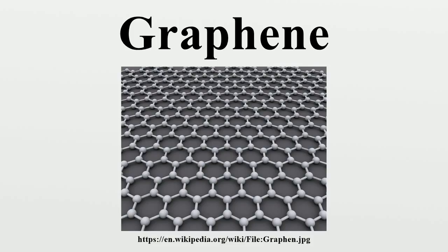Graphene is a combination of graphite and the suffix -ene, named by Hanns-Peter Boehm, who described single-layer carbon foils in 1962. The term graphene first appeared in 1987 to describe single sheets of graphite as a constituent of graphite intercalation compounds; conceptually a GIC is a crystalline salt of the intercalant and graphene.